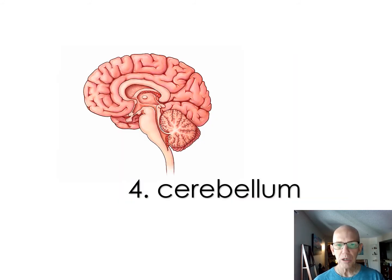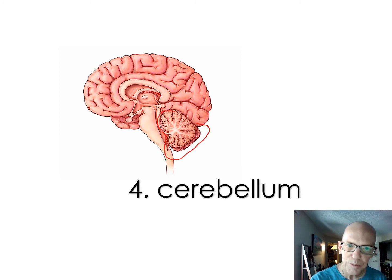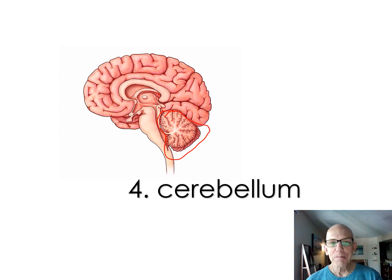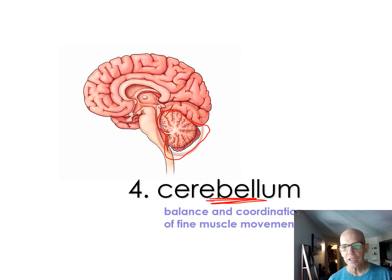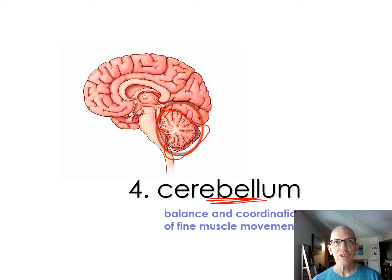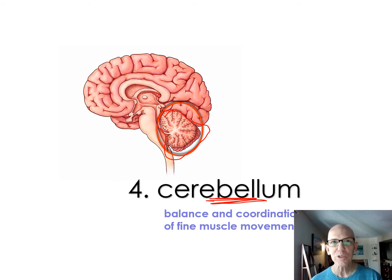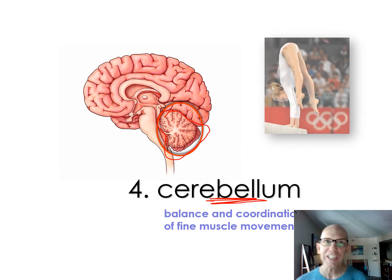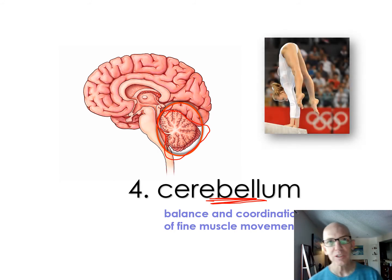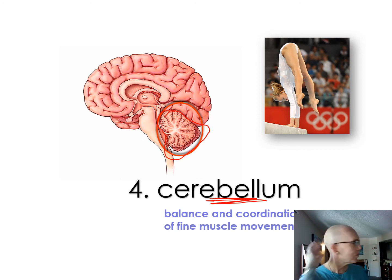When people have problems with the thalamus sorting mechanism, it's called synesthesia — where they taste colors and things like that. You actually have two thalami — one on each side. Part four is the cerebellum. I think of it like a bell in the back of your head. The bell is your balancer. Gymnasts and X-game athletes have great cerebellums — it allows them to rotate in three-dimensional space and land on their feet.